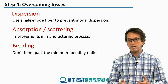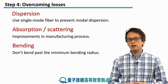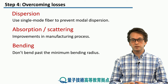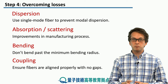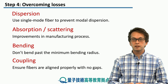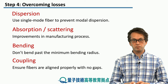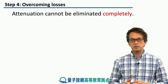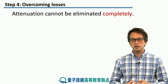Furthermore, bending — just don't bend your fiber unless you absolutely have to. And even then, be very mindful of how much you bend your fiber. And finally, coupling errors can be eliminated, at least partially, by ensuring that the fibers are aligned properly and there are no gaps between them. But even if we try to do all of these things, there will still be some attenuation and some losses.